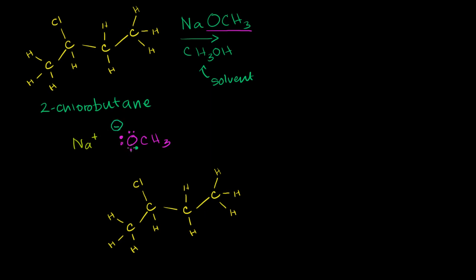In solid form, when they're not dissolved, they form an ionic bond and they form a crystal-like structure. It's a salt. But when you dissolve it in something, in a solution, in this case we have methanol as the solution, they will dissociate from each other. And what you have right here is this methoxide.